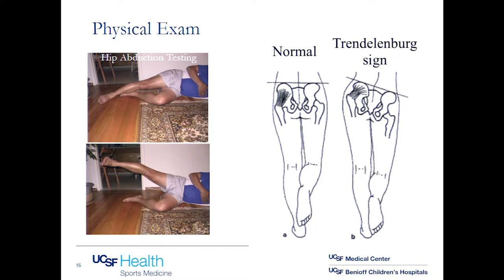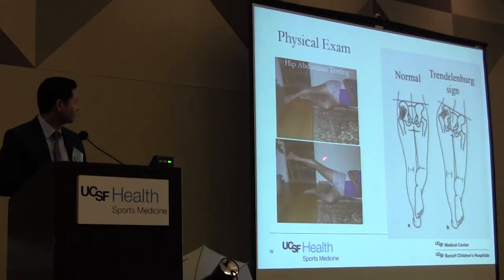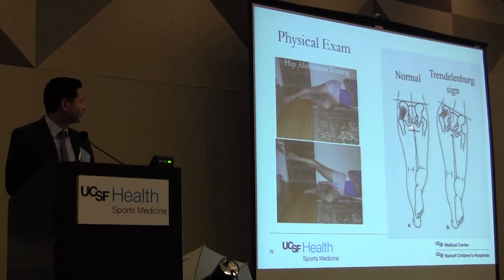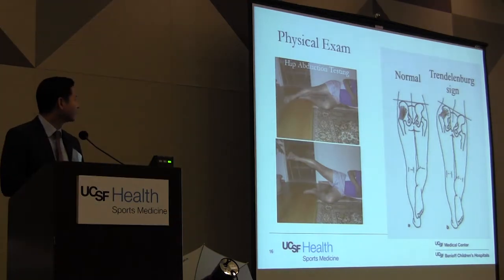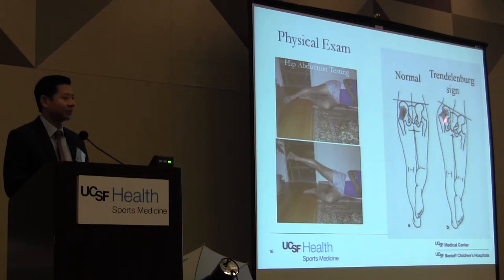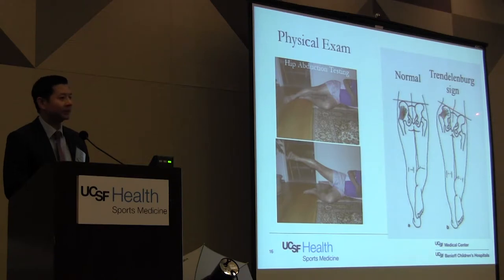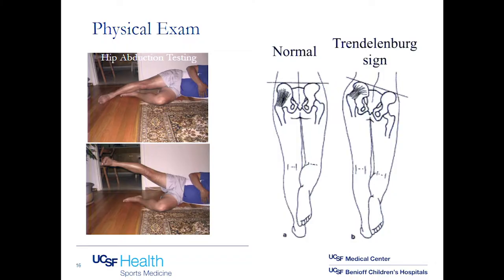For strength testing in abduction, have the patient lie on their side with legs straight and lift the leg straight up. If they have a tear in the gluteus muscle, they won't be able to lift it at all. The Trendelenburg sign: when you have them stand on one leg on the injured side, the pelvis will drop off to the other side. When you stand on one leg, you contract the abductors on that side to keep the pelvis level — when the muscle is torn, it just falls to the other side.